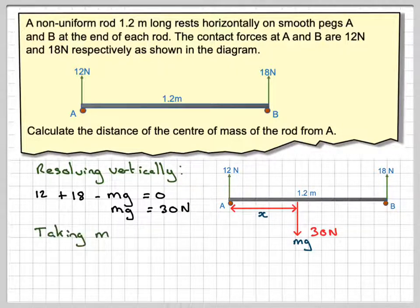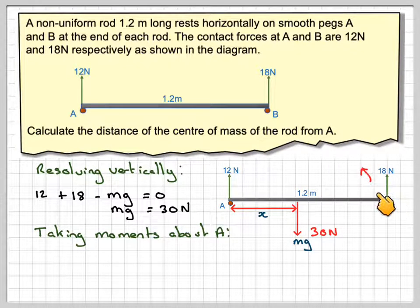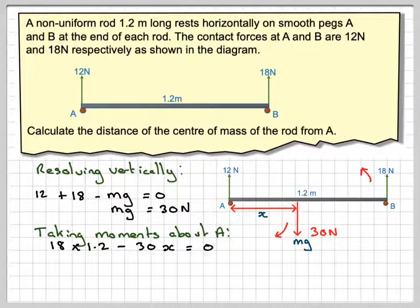Then if we take moments about A, the anti-clockwise ones are positive. So that's going to be 18 times 1.2. And then going in the clockwise direction, we're going to have the 30 newtons times x minus is equal to 0.